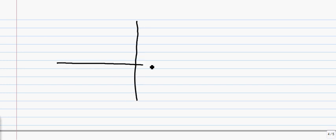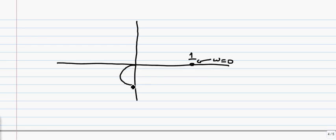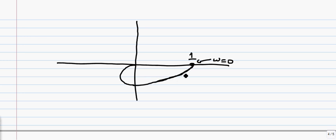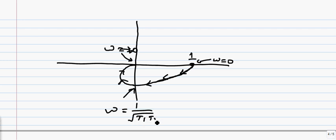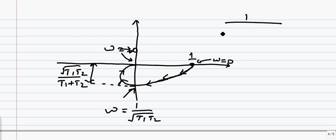In summary: when ω = 0, the magnitude is 1 at 0° on the real axis. The curve sweeps continuously — with arrow marks indicating the direction of increasing ω — ending at the origin when ω tends to infinity. The key intermediate point is at ω = 1/√(T₁·T₂), where the magnitude equals √(T₁·T₂)/(T₁+T₂). This is the polar plot for the transfer function 1 over (1 + sT₁)(1 + sT₂).